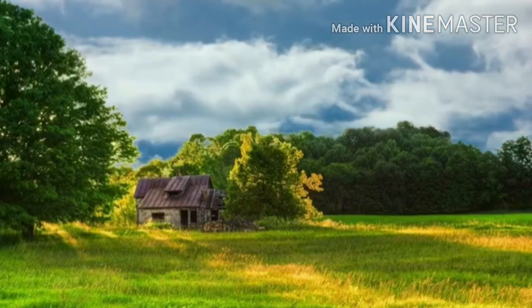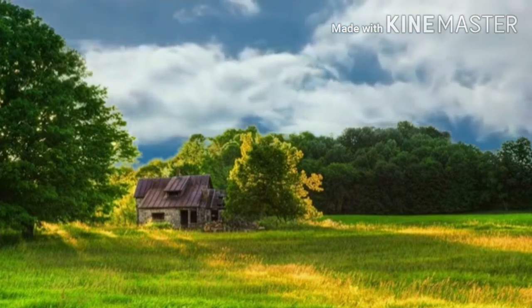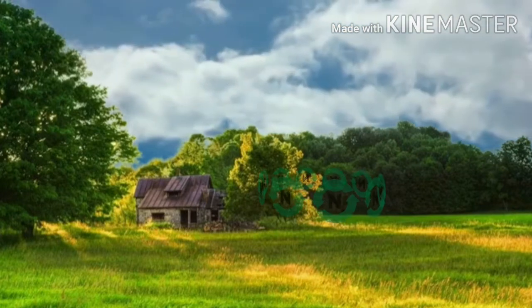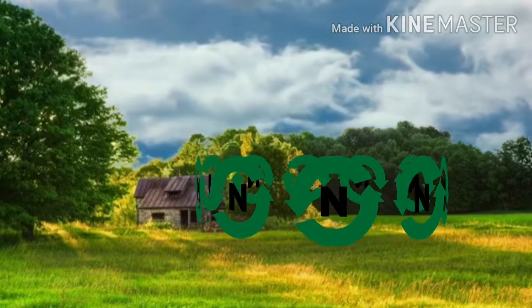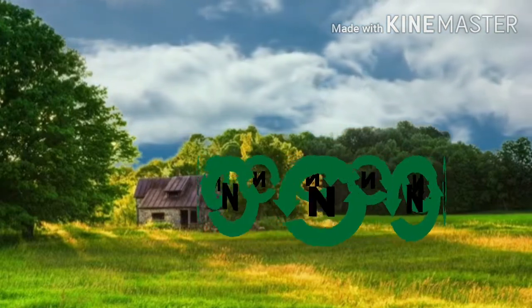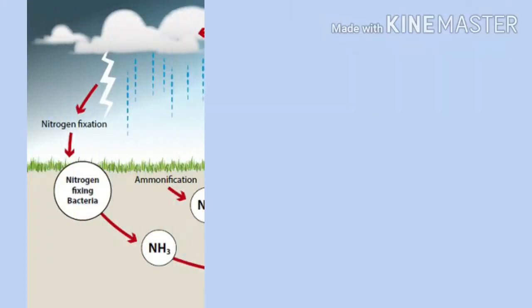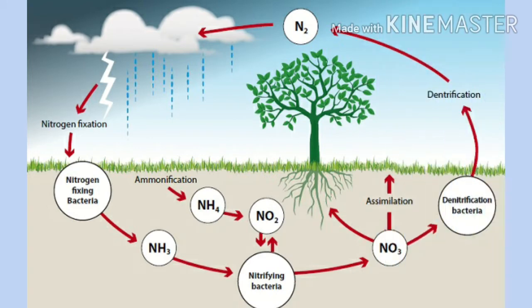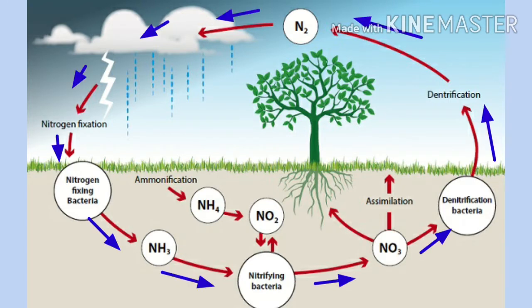The air around us is a mixture of gases. Out of all these gases, the one most evidently available is nitrogen. Concentration of nitrogen is fixed in the biosphere. Nitrogen that is part of the living system is returned back to the atmosphere by various processes and is again taken up by living organisms. This constant movement of nitrogen in a cyclic manner in the biosphere is termed as the nitrogen cycle.